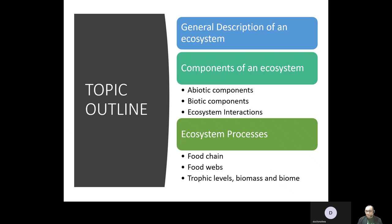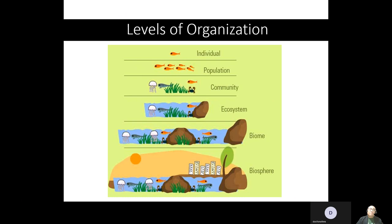For the topic outline, we're going to discuss and describe an ecosystem and its components — namely the abiotic and biotic components — along with the different kinds of interactions that happen in the ecosystem, and in addition to that, the ecosystem processes such as the food chain, food webs, trophic levels, biomass, and biomes.